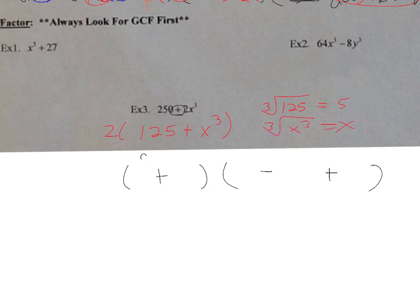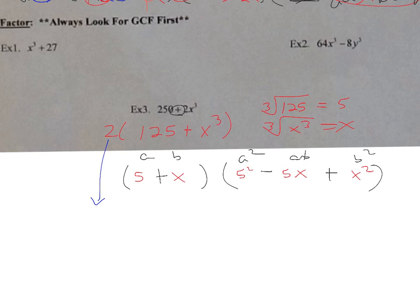A = 5, B = x. Small parenthesis: 5+x. Large parenthesis: front is A² = 25, middle is A×B = 5x, end is B² = x². Don't forget to bring down the GCF of 2. Final answer: 2(5+x)(25−5x+x²).